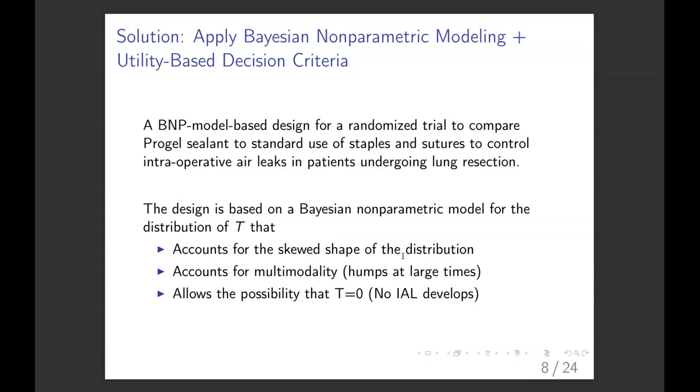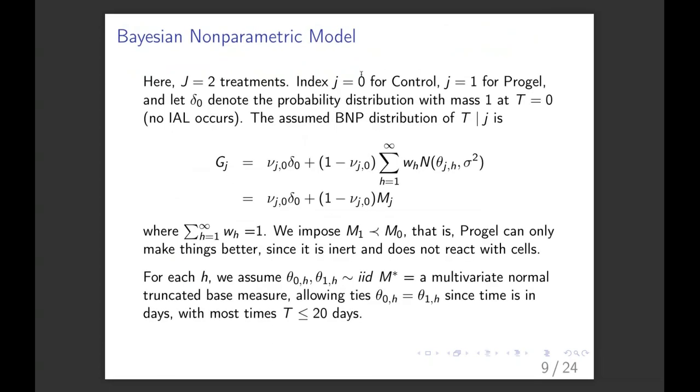So the Bayesian nonparametric model for T that we cooked up accounts for the skew shape of the distribution and multimodality. It's a mixture of normals and allows a point mass at zero. For treatment G, it's a mixture of a point mass at zero and then this distribution mixture of normals for the rest of the distribution, the people that don't have no air leak at all. We've imposed the constraint that things can only get better with ProGel because actually it's inert. It doesn't react with the cells, so it can't harm you.